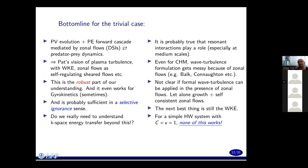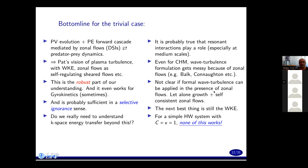It's probably true that resonant interactions play a role in this picture, especially at medium scales. However, even for the Charney-Hasegawa-Mima model, wave turbulence formulation gets extremely complicated when we include zonal flows, because zonal flows are self-generated and basically break down the basic assumptions of wave turbulence — at least formal wave turbulence. It's not clear if formal wave turbulence can be applied in the presence of zonal flows, let alone when we include growth plus self-consistent zonal flows. So it seems the next best thing is still the wave kinetic equation. But none of this actually works for a Hasegawa-Wakatani system with c equals kappa equals one, which is rather discouraging.